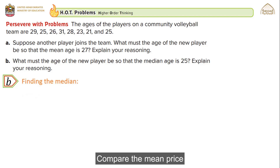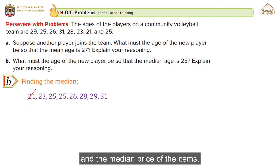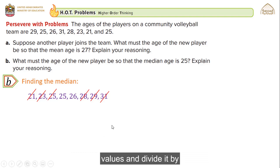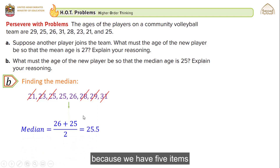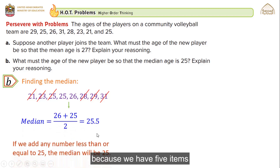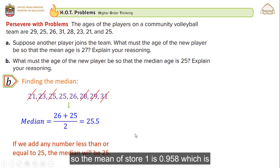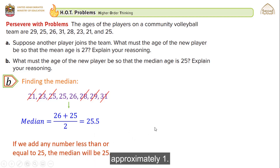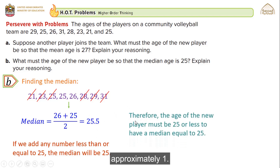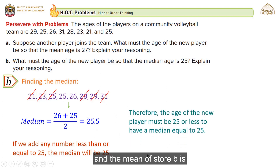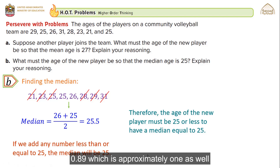For part B, finding the median: ordering the data from least to greatest and canceling from right and left, we end up with 25 and 26 as the two middle values. The median without the new player is 25 plus 26 divided by 2, which is 25.5. If we add any number less than or equal to 25, the median would be 25. Therefore, the age of the new player must be 25 or less for the median to equal 25.